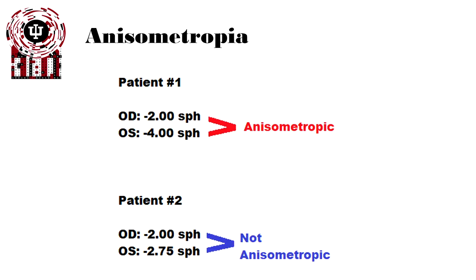Here are two patient examples to illustrate the difference between anisometropia and not anisometropic. In the top example, there's a two-diopter difference between the person's right eye and their left eye — in this case, they're anisometropic. The patient below only has three-quarters of a diopter difference between the two eyes, which is not anisometropia.